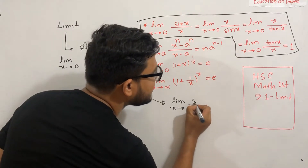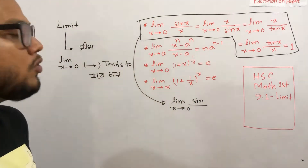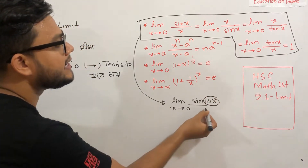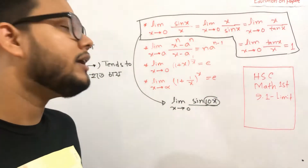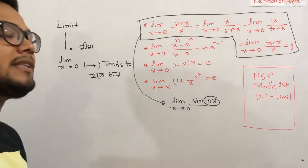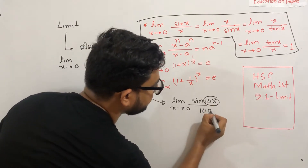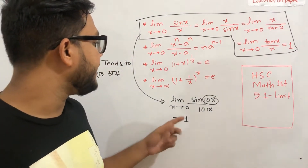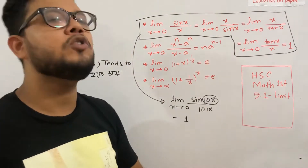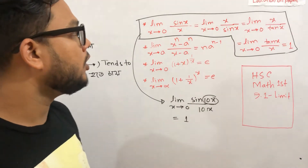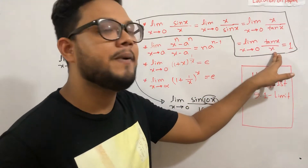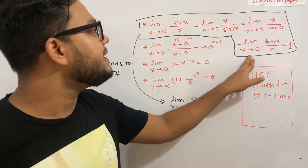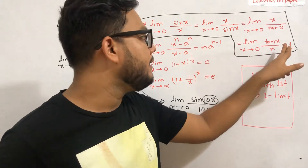Let's try to do this. What is the value of sin? x is the value of sin. I will go to the limit of tan x. If you do this, you will have the value of tan x. The value of this is the value of sin. If you have the value of sin, you will have the value of sin.